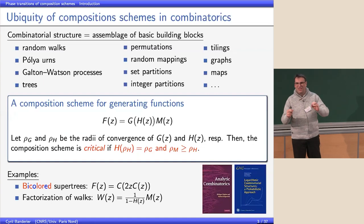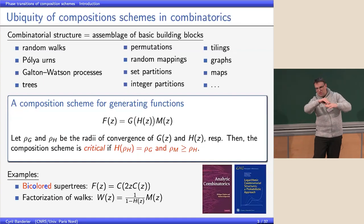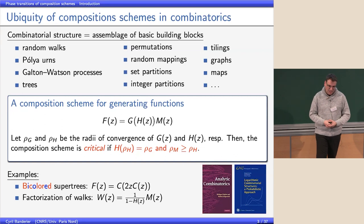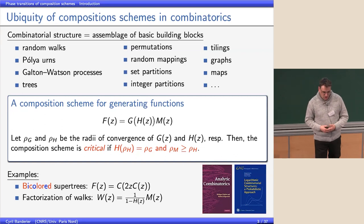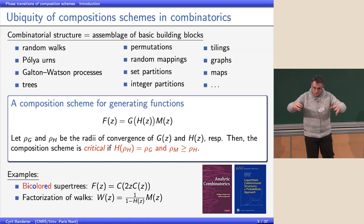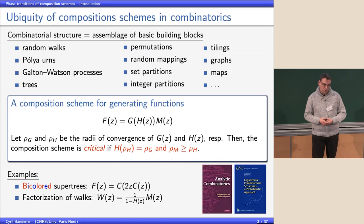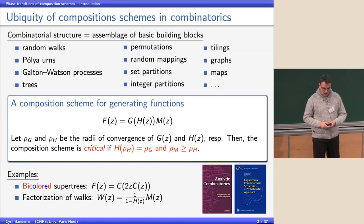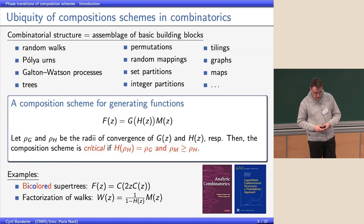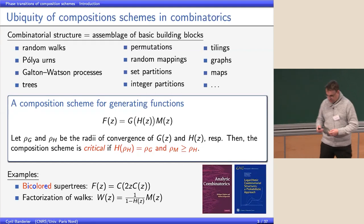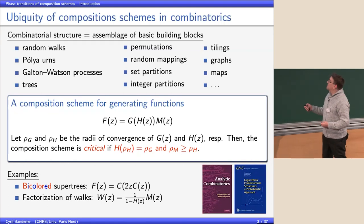Permutations are sets of cycles, random mappings, set partitions, integer partitions, and even tilings — for example, if you tile by dominoes which can be horizontal or vertical, you have a sequence of horizontal or vertical pieces and you get the Fibonacci numbers. Graphs, maps — all of these can be seen as some kind of mixture or manipulation of basic building blocks, similar to the type of operations we saw this morning.